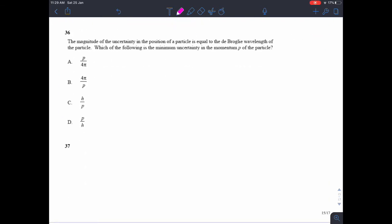The magnitude of the uncertainty in the position of a particle is equal to the de Broglie wavelength of the particle. Which of the following is the minimum uncertainty in the momentum of the particle?